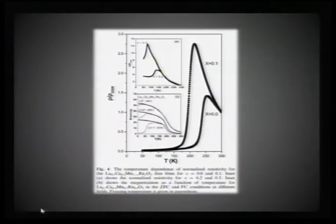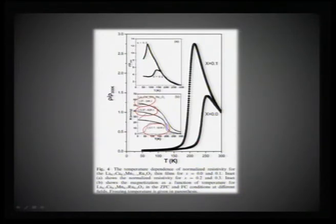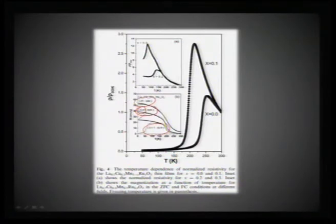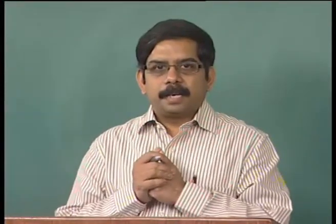To sum up on cluster glass: ZFC-FC curves recorded at different applied fields show that at 2 tesla the ZFC-FC difference nearly vanishes — the cluster glass influence is suppressed by external field. At 300 oersteds the opening is larger, and at very small fields a clear spin/cluster glass signature is seen. This confirms that antiferromagnetic interactions can be largely minimized under high magnetic field.